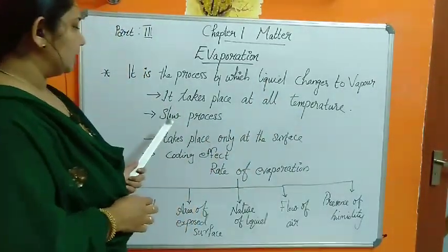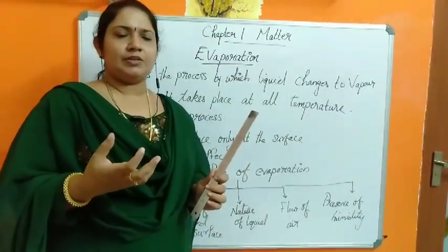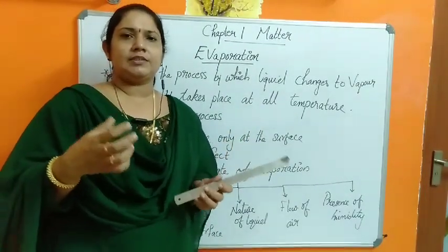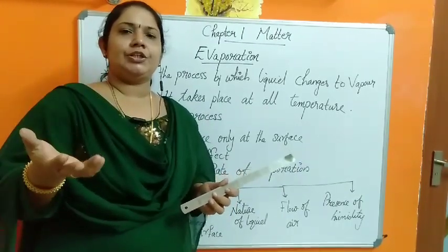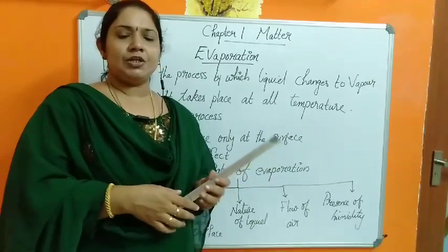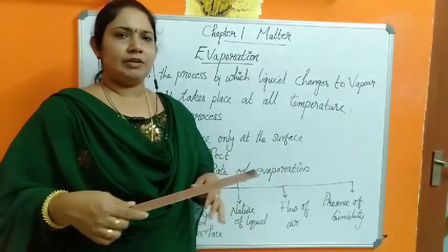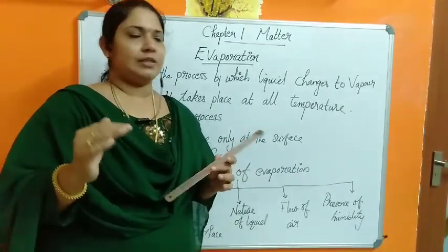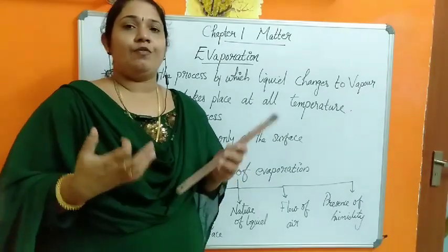The second difference is that evaporation is a slow process. When water is boiling, you can see all the bubbles coming up. Once the water reaches 100 degrees, the entire water starts changing into gas all of a sudden. But evaporation — when you see some liquid on the floor — after 5 or 6 minutes, it will gradually evaporate. Boiling is a rapid or fast process.